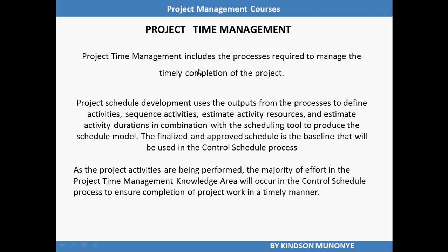Project time management includes the processes required to manage the timely completion of the project. Project schedule development uses the outputs from the processes to define activities, sequence activities, estimate activity resources, and estimate activity duration in combination with the scheduling tool to produce the schedule model. The finalized and approved schedule is the baseline that will be used in the control schedule process. The majority of the efforts in the project time management knowledge area will occur in the control schedule process to ensure completion of project work in a timely manner.